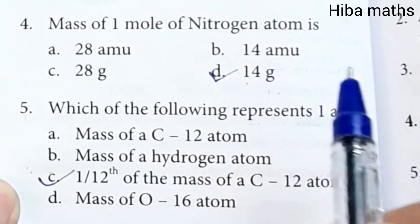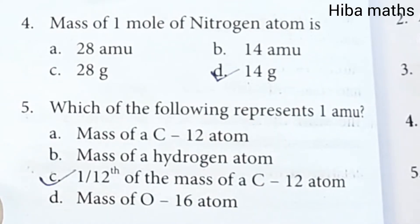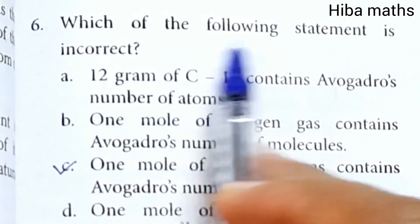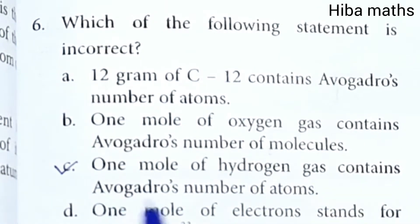Mass of one mole of nitrogen atom is 14 grams. Which of the following represents 1 amu? 1/12th of the mass of C12 atom. Sixth question: Which of the following statement is incorrect? One mole of hydrogen gas contains Avogadro's number of atoms.